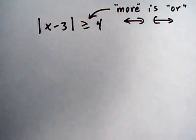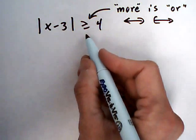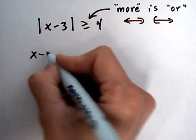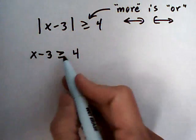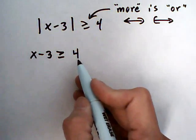Alright, so the way we're going to set that up is we're going to do x take away 3 greater than or equal to 4. So we're going to keep the symbol in the same direction and keep the sign of the number.